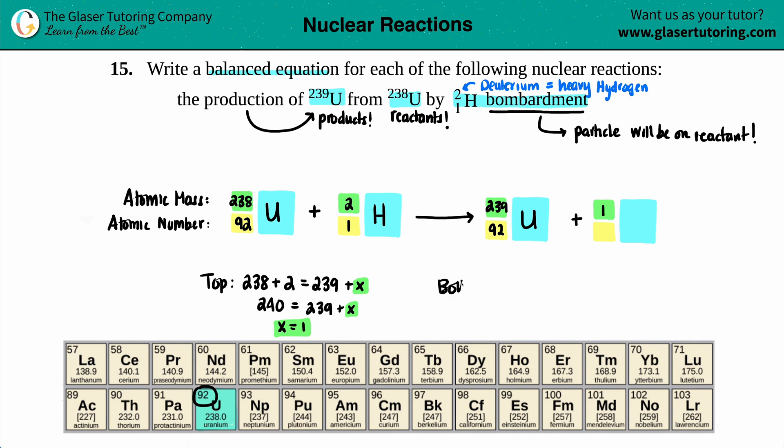Now let's work on the bottom. So we got 92 plus 1, just so that everything's written out, equals 92 plus x. Do we know what the x is? I would hope so at this point. 93 equals 92 plus x, and then x equals 1.